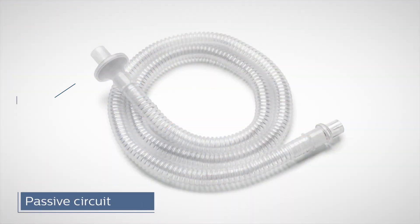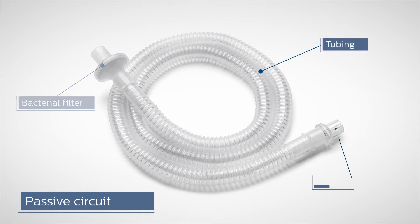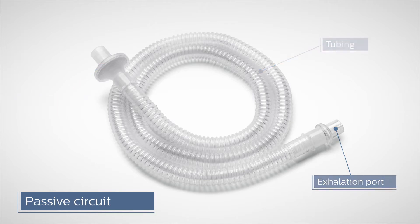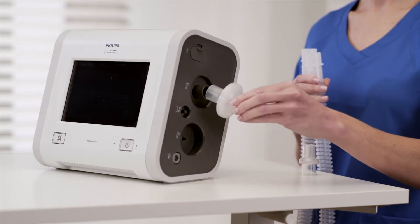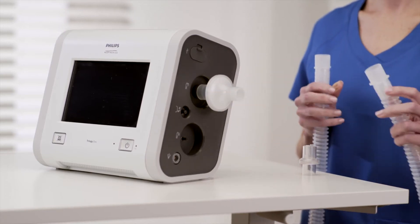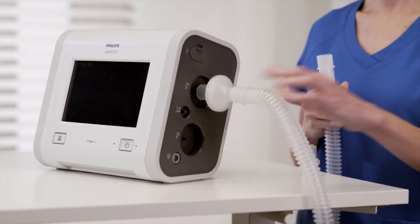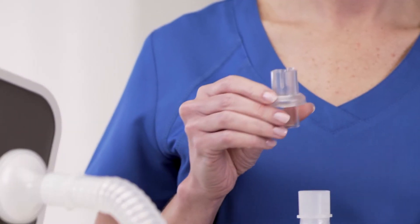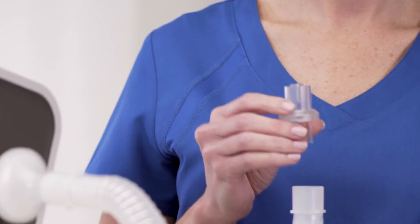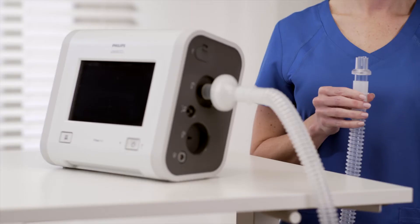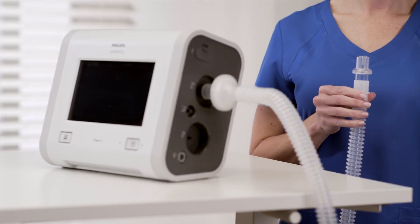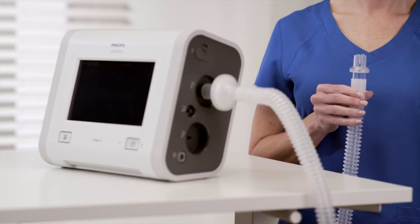The passive circuit consists of a bacterial filter, tubing, and exhalation port. Connect the bacterial filter and tubing to the inspiratory port on the side of the device. A leak device, also known as an exhalation port, is mandatory during invasive ventilation or when using a circuit with a non-vented mask. The passive circuit is now complete.